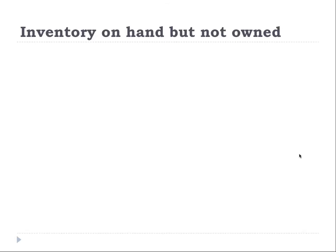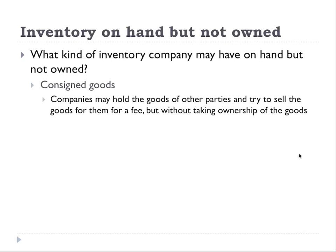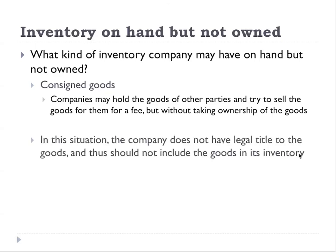The other situation is when the firm has inventory on hand that is not actually the firm's inventory. An example is consigned goods. Sometimes you go to a dealership and may see a lot of cars on the lot, but those cars don't belong to the dealership — the dealership is just selling them for someone else and collecting a fee, but doesn't have ownership. In this situation, the firm doesn't have legal title to those goods, so they should not include them in its inventory.